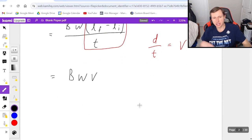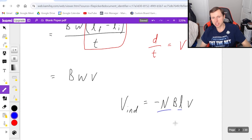the answer is just going to be B times W times V. And one more thing I'll say, usually the equation you'll see online for this is negative N, B, L, V, which is basically the same equation. I'm just saying that N is 1, and I replaced L with W, which that doesn't matter, it's still a distance.